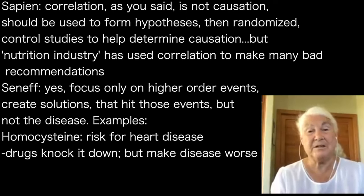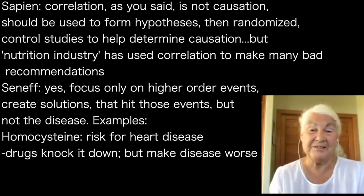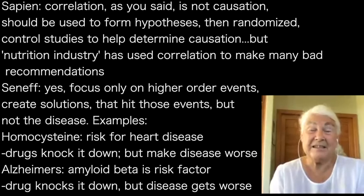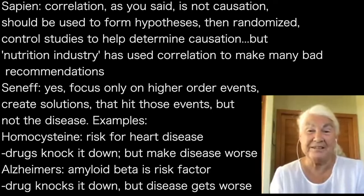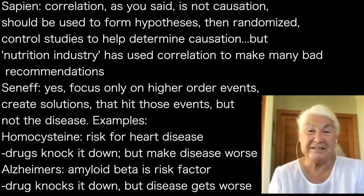Homocysteine is a good example — it's elevated in the blood in association with heart disease and is a very strong risk factor. They developed drugs that can knock it down and were so excited they could bring homocysteine levels down. Every time they tried to use them, they failed miserably and made the disease worse. Alzheimer's is another example — amyloid beta. They were convinced amyloid beta clearly causes Alzheimer's, so they found really expensive drugs to get rid of it. They don't get rid of the Alzheimer's, and patients get worse usually. It's just a complete failure.